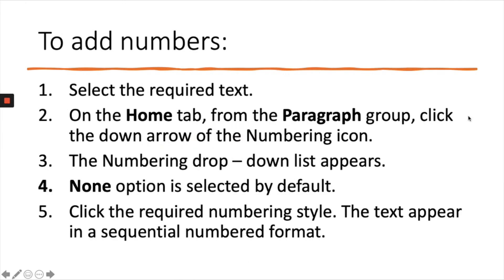To add numbers, select the required text and go to the Home tab. From the Paragraph group, click the down arrow of the Numbering icon. The numbering drop-down list appears, with None selected by default. Click the required numbering style, and the text will appear in a sequential numbered format.